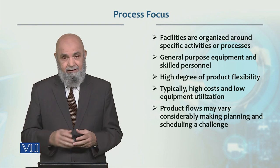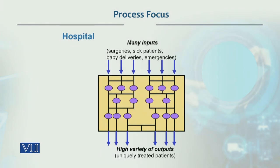This is an example of a hospital, where we can see there are many inputs. As I explained earlier, a productive system has many inputs, their transformation takes place, and then there is output in the form of goods or services. Here also, many inputs are shown — surgeries, sick patients, baby deliveries, emergencies, and so on — going into this facility.